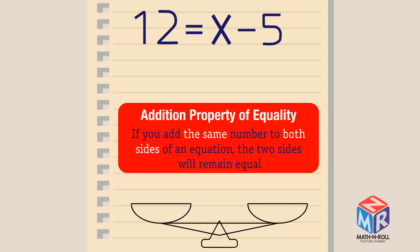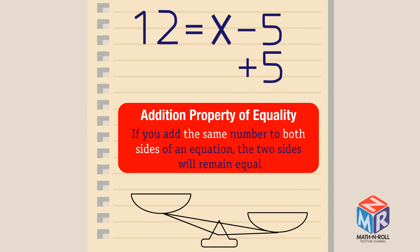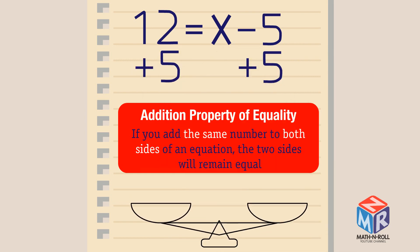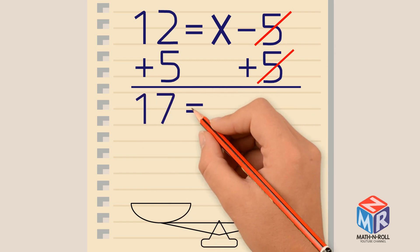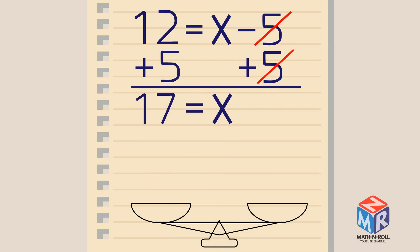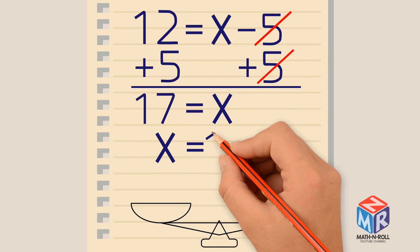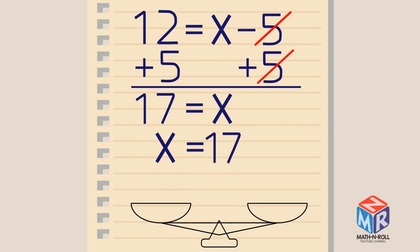To solve, we add 5 on both the right and the left side of the equation. We cancel out, and we are left with 17 equals x. Let's rewrite our answer so that the x is on the left side. x equals 17.